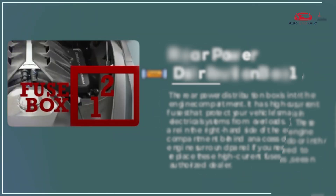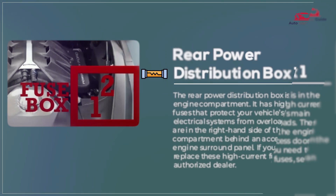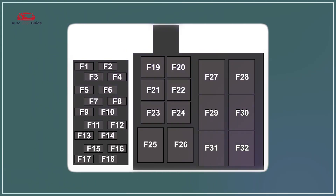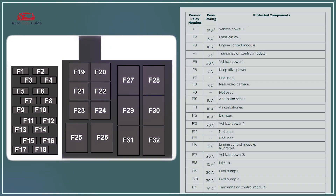Rear power distribution box one: the 2020 Ford GT power distribution box efficiently organizes fuses and relays for electrical systems in a compact, lightweight design with cooling features.